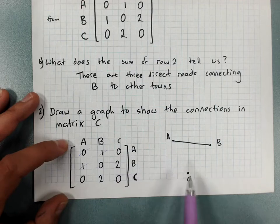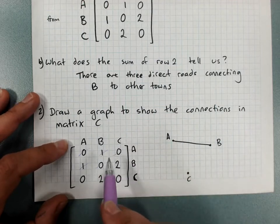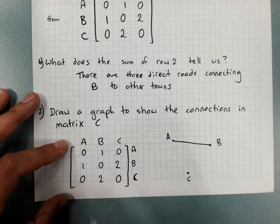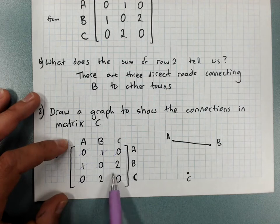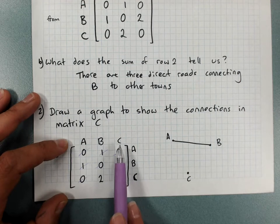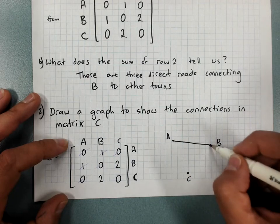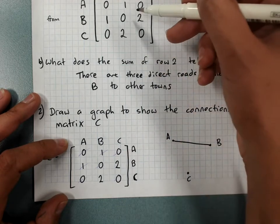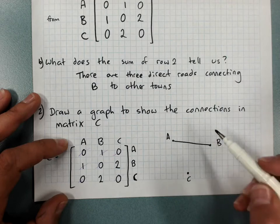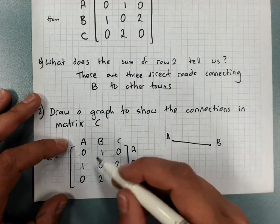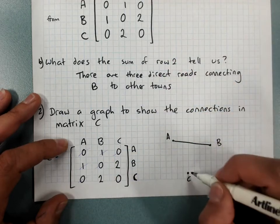A to C, no roads, which means C to A, no roads. Leaving me with B to C, C to B, two roads. Oh look. Oh look. I created exactly the same matrix that was really unhelpful of me. I'm sorry. I was trying to make up a new matrix and I didn't notice it was the same as the original.